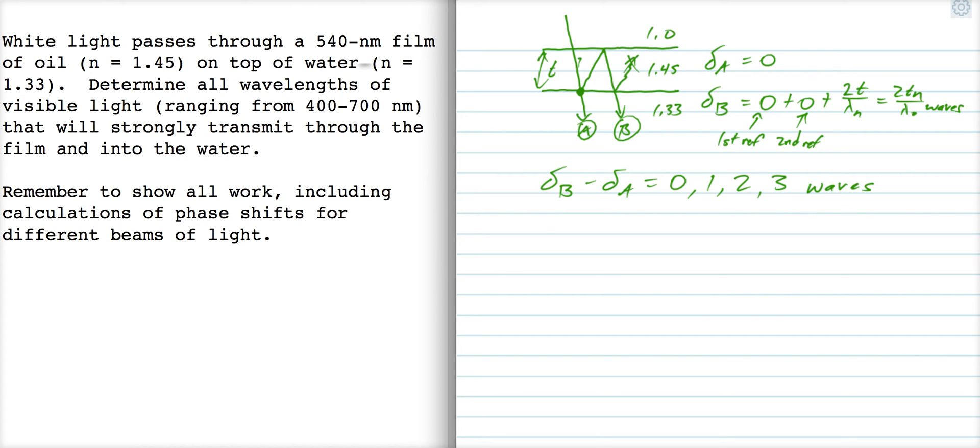Well, delta B minus delta A is just 2T over lambda naught. Well, if we set that equal to 0, well, that gives us, that's not a, you don't get a solution from that, right? You can't solve for the wavelength. The wavelength is basically infinity. And that doesn't do us any good. So let's try the next condition, which is 2T over lambda naught equals 1. That gives us lambda naught is equal to 2T.